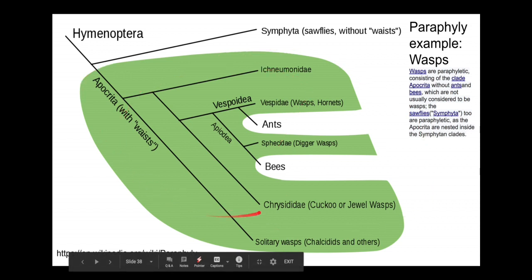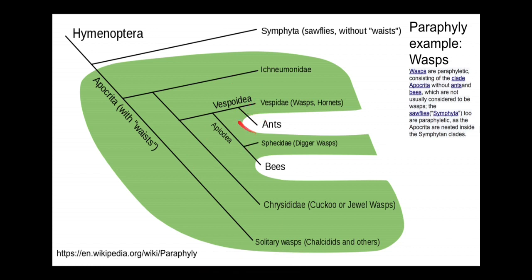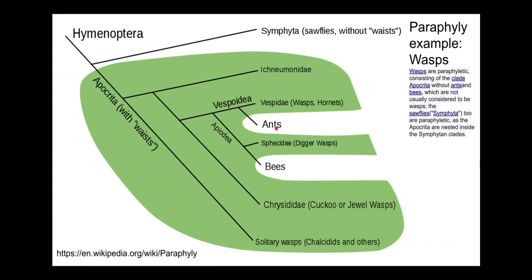Another example of a paraphyletic group is wasps. The green on the tree shows all taxa associated with wasps; however, ants and bees both evolved from wasps and are generally recognized as separate taxa. Creating a group of just wasps ignores these evolutionary relationships and cuts them off artificially, even though they share a common ancestor — so focusing on the similarities of wasps ignores the fact that bees and ants are closely related and share that common ancestor.